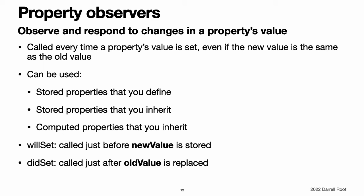Similarly, if you implement a didSet observer, it is passed a constant parameter containing the old property value. You can name the parameter or use the default parameter name of oldValue. If you assign a value to a property within its own didSet observer, the new value you assign replaces the one that was just set. The willSet and didSet observers of superclass properties are called when a property is set in a subclass initializer after the superclass initializer has been called.